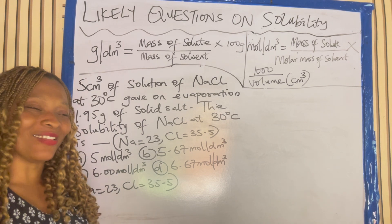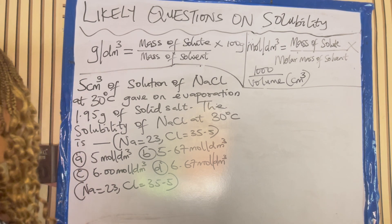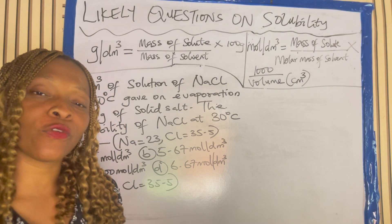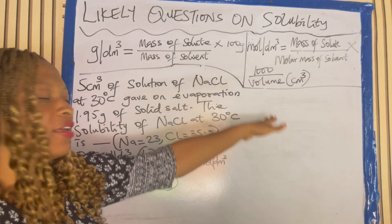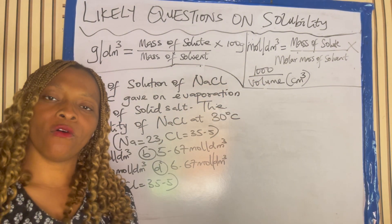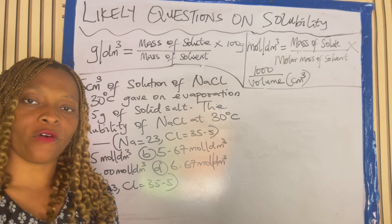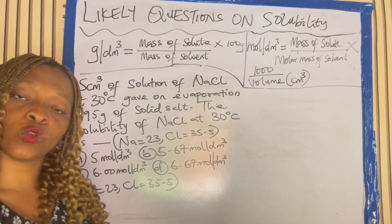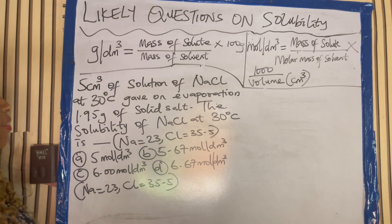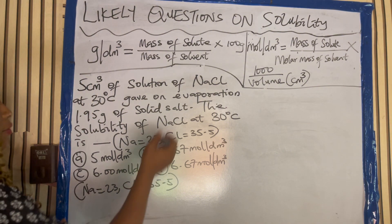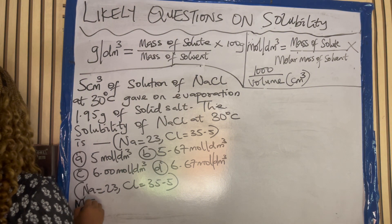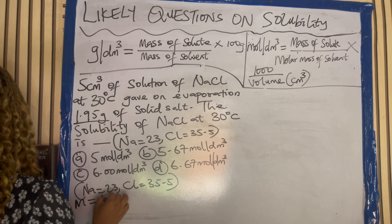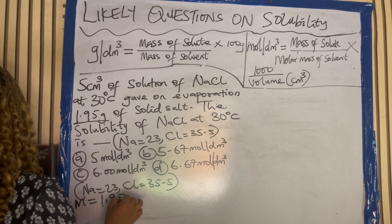Welcome back. Let's do the question. Once you hear mole per dm cube, what comes to your mind? The second formula: mass of solute over molar mass of solvent times 1000 over volume. Without wasting our time, let's find the mass of solute. The mass of the solute is 1.95 gram.